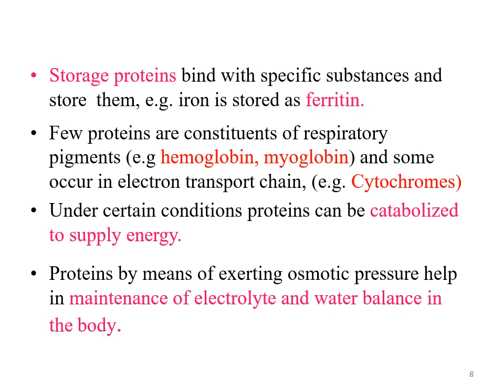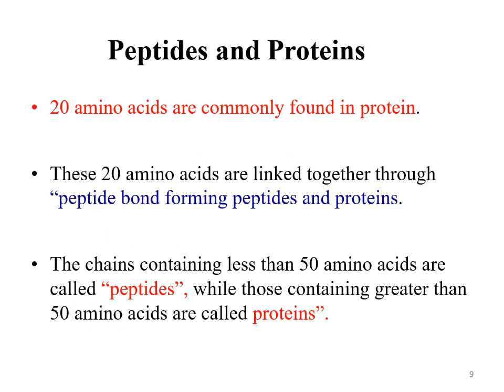Many proteins, by means of exerting osmotic pressure, help in the maintenance of electrolyte and water balance in the body. For example, plasma proteins are responsible for the maintenance of water balance and electrolyte balance. Proteins are made up of amino acids. There are around 300 amino acids present in nature, but only 20 amino acids are the standard amino acids which form the structure of almost all proteins. These 20 amino acids are linked together through a covalent linkage known as a peptide bond, which is formed between amino acids to ultimately form peptides and then proteins. Chains containing fewer than 50 amino acids are called peptides while those containing greater than 50 amino acids are called proteins.